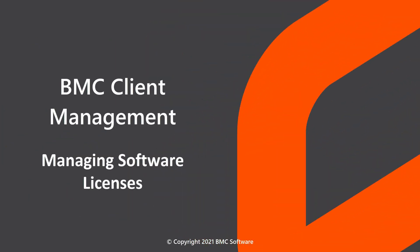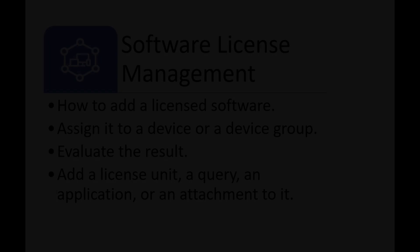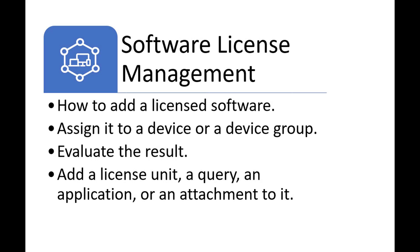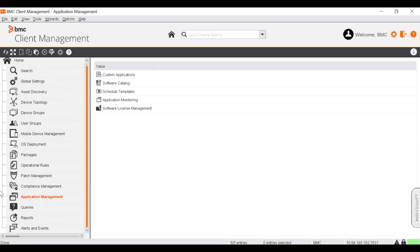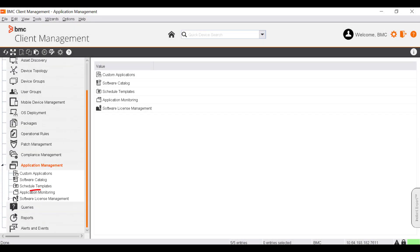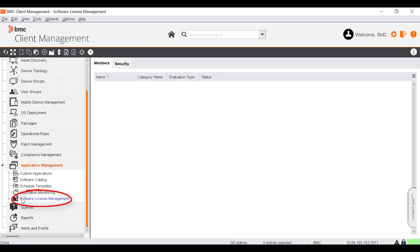This video helps you understand how to manage software licenses using the Application Management module. It will cover how to add a license software, assign it to a device or device group, evaluate the result, add a license unit, a query, an application, or an attachment to it. The Software License Management node enables you to manually create a license software or add several licenses at a time by importing license data via a CSV file.